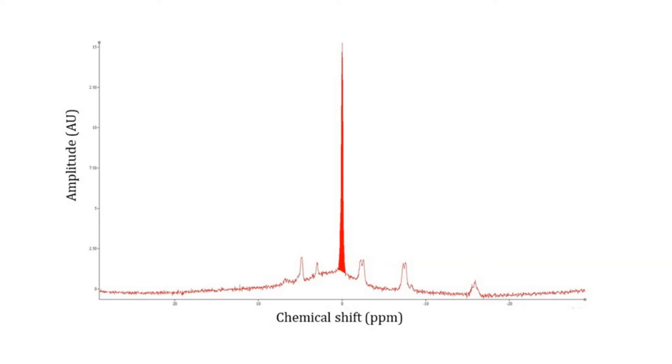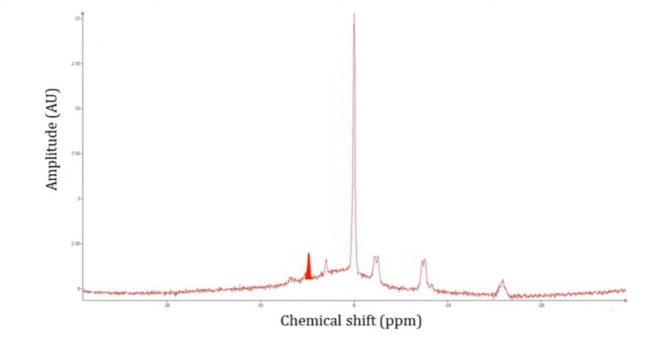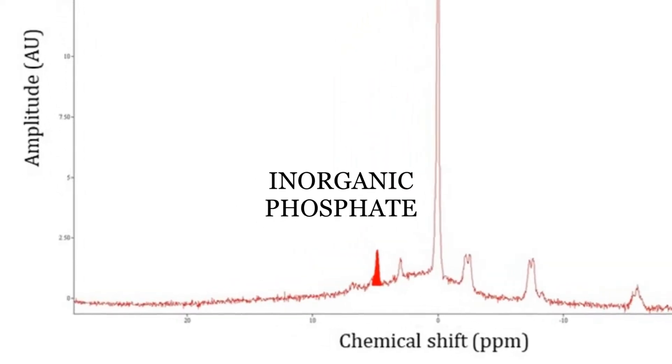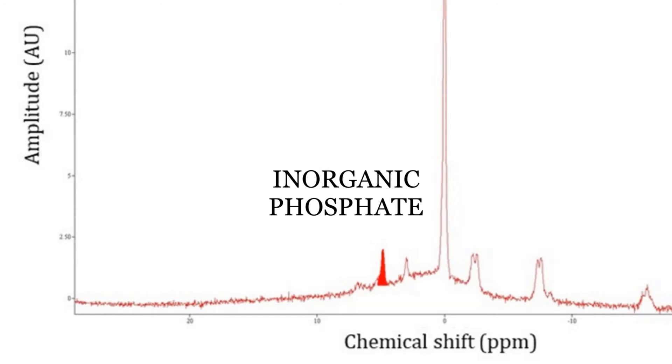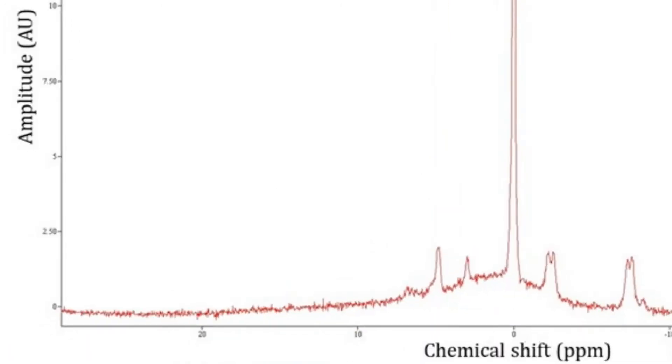The large central resonance is the phosphocreatine peak. Phosphocreatine is the main energy buffer of the cell. We can also detect inorganic phosphate, which is one of the products of ATP hydrolysis, as well as phospholipids, anabolites and catabolites.